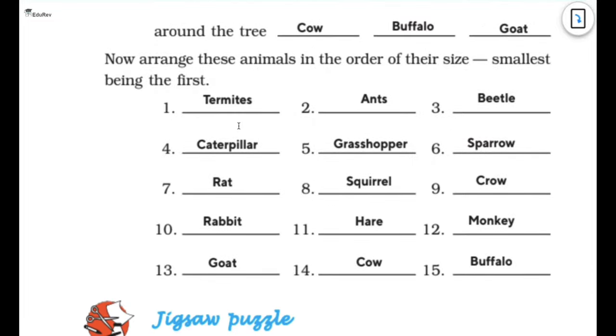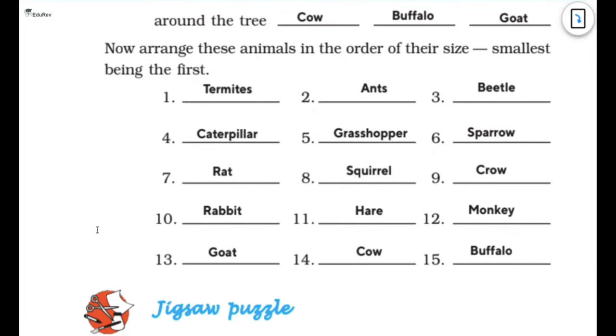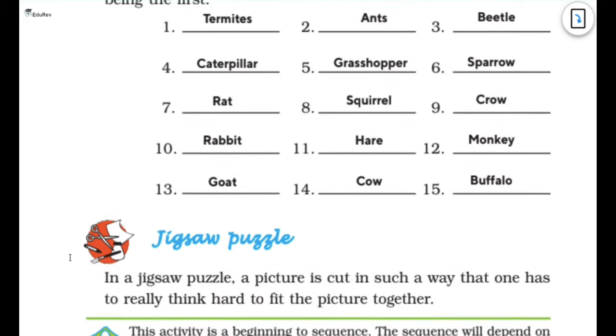Now arrange these animals in the order of their size. Smallest being the first. So it will be termites, ants, then beetle, then caterpillar, grasshopper, sparrow, then rat, then squirrel, crow, rabbit, hare, monkey, goat, cow and finally buffalo. I have taken these animals so that doesn't mean that you also will take the same animals. You can take any animal whatever you want to choose and then you can actually arrange them in the order that is from smallest to the biggest.